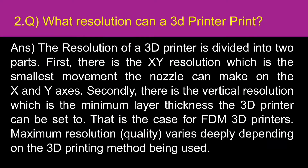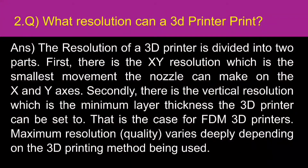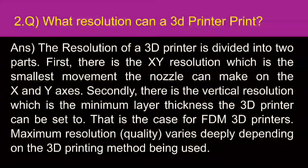What resolution can a 3D printer print? The resolution of a 3D printer is divided into two parts. First, there is XY resolution, which is the smallest movement the nozzle can make on the X and Y axis. Secondly, there is vertical resolution, which is the minimum layer thickness the 3D printer can be set to — that is the case for FDM 3D printers. Maximum resolution quality varies greatly depending on the 3D printing method being used.